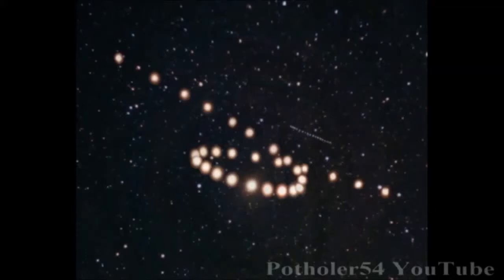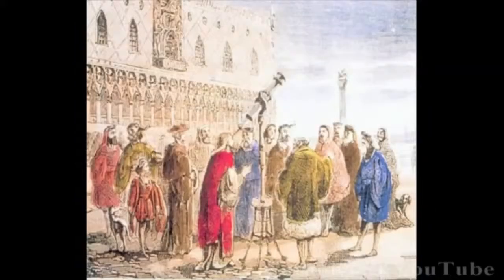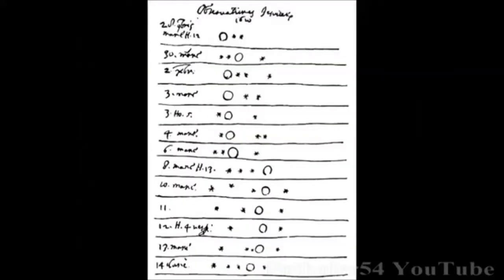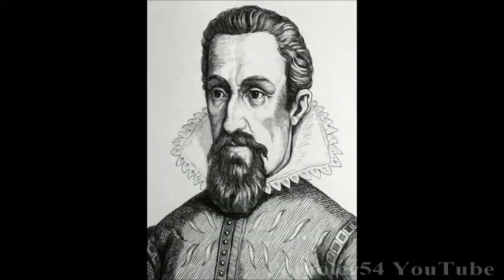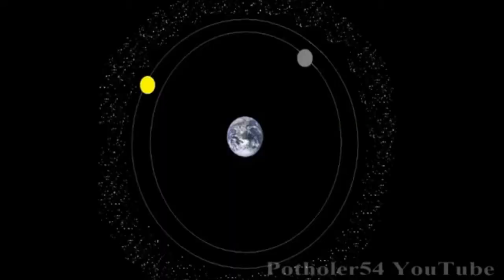When the telescope was invented, these planets turned out to be very different to the fixed stars. But it wasn't until Johannes Kepler calculated the exact orbits of the planets that a model of the solar system at last fit the observations. His law of planetary motion turned this into this.